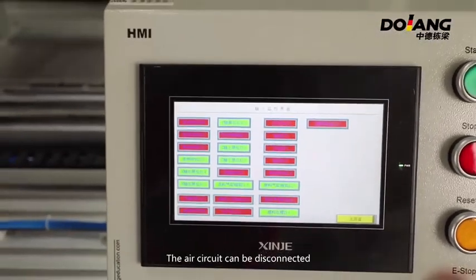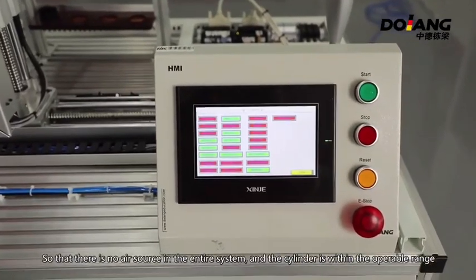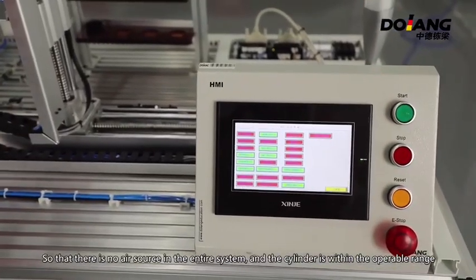The air circuit can be disconnected, so there is no air source in the entire system and the cylinder is within the approval range.